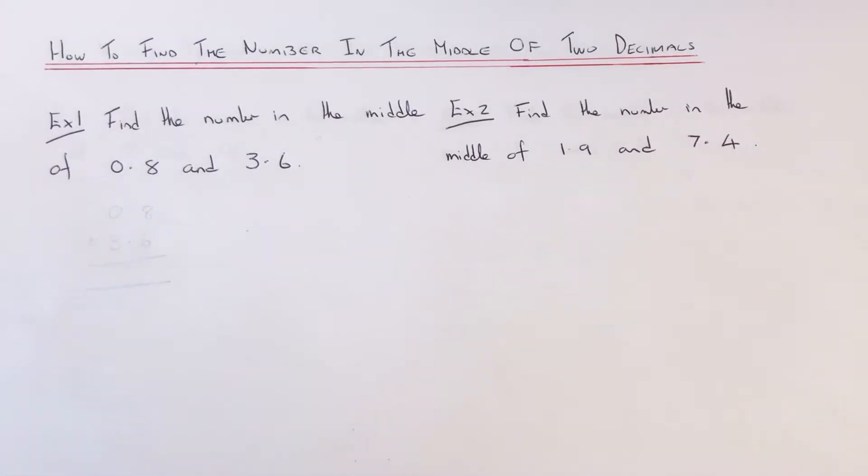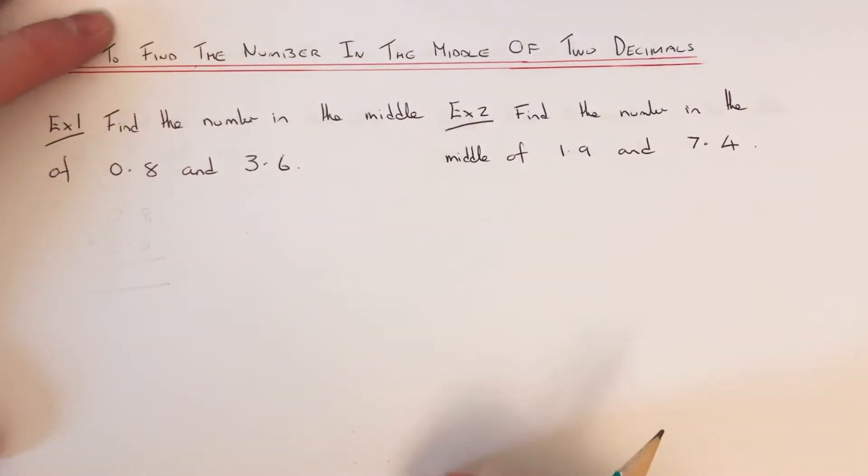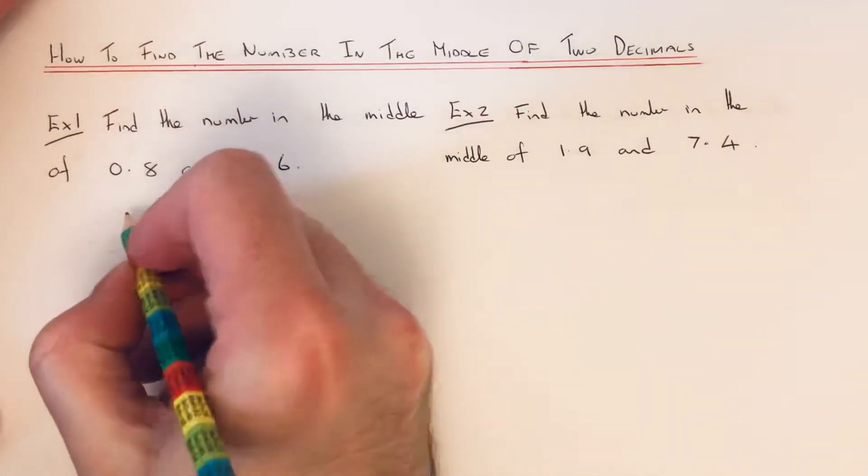So let's have a look at example 1. We've got to find the number in the middle of 0.8 and 3.6. So the first thing you need to do is add the two decimals up.